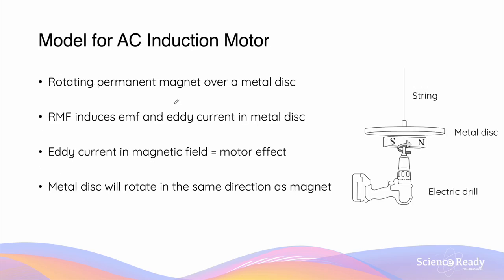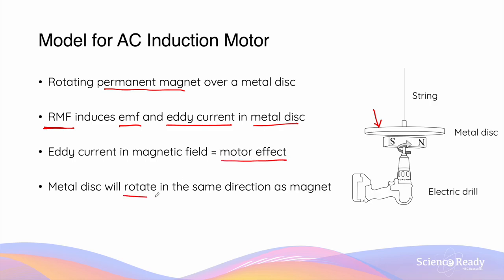The operation of an AC induction motor can be demonstrated in a classroom. When a permanent magnet is made to rotate above a metal disc using an electric drill, the metal disc experiences changes in magnetic flux due to the rotating magnetic field — RMF. This is very similar to what the squirrel cage experiences in an induction motor. By Faraday's law, this change in flux induces an EMF and therefore produces eddy currents — circular currents — inside the metal disc. When these eddy currents flow through the disc inside a magnetic field, the motor effect causes a force to act on the disc, rotating it in the same direction as the rotating magnet.